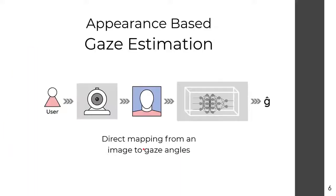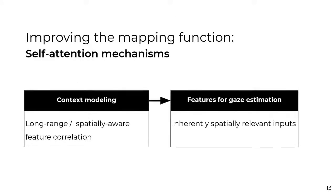Our work focuses on appearance-based gaze estimation — the objective is to extract gaze vector information directly from images of the subject's eyes and/or face. This is done by training a learning algorithm to act as a mapping function between images and gaze information. We focus on improving the accuracy of this mapping function, a convolutional neural network, by augmenting it with self-attention. One of the main advantages of self-attention mechanisms is their ability to model long-range contexts into features.